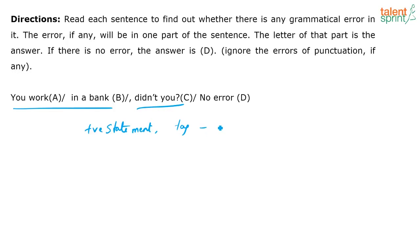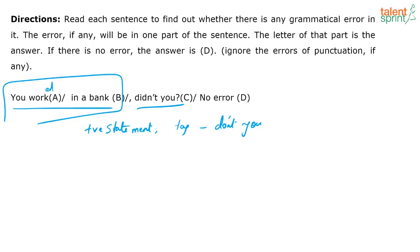So 'didn't you' is incorrect — I need 'don't you' because the sentence is in simple present tense. 'You worked' with -ed would make 'didn't you' correct, but it's not in past tense. So: 'You work in a bank, don't you?' The cornerstone rule: if the main part of the sentence is positive, I need a negative question tag. If the main part of the sentence is negative, I need a positive question tag. For example: 'You don't recognize me, do you?'